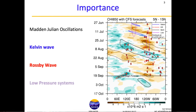By looking at these Hovmöller diagrams you can actually examine four important aspects: the MJO, Kelvin wave, Rossby wave, and any other low pressure system — and you can get to know their status one week ahead or even two weeks in advance.